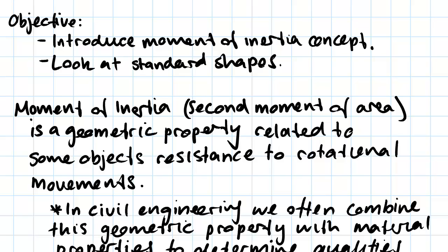It's a geometric property which is related to some object's resistance to rotational movements. We'll see what this means in the next couple of videos where we do some examples. But basically in civil engineering, we use this property.